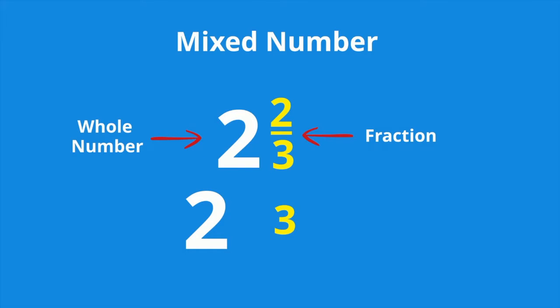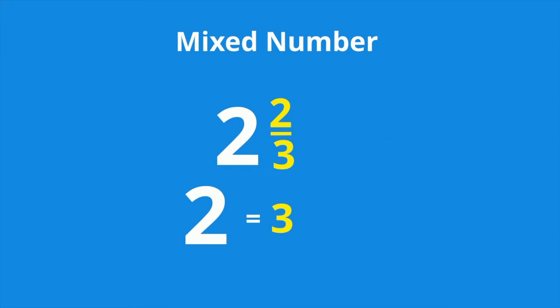So the mixed number 2 and 2 thirds, each whole number is worth 3. Therefore, with 2 and 2 thirds, you have 3 times 2, which equals 6 parts, plus you have 2 in the numerator, so it becomes 6 plus 2, which equals 8.